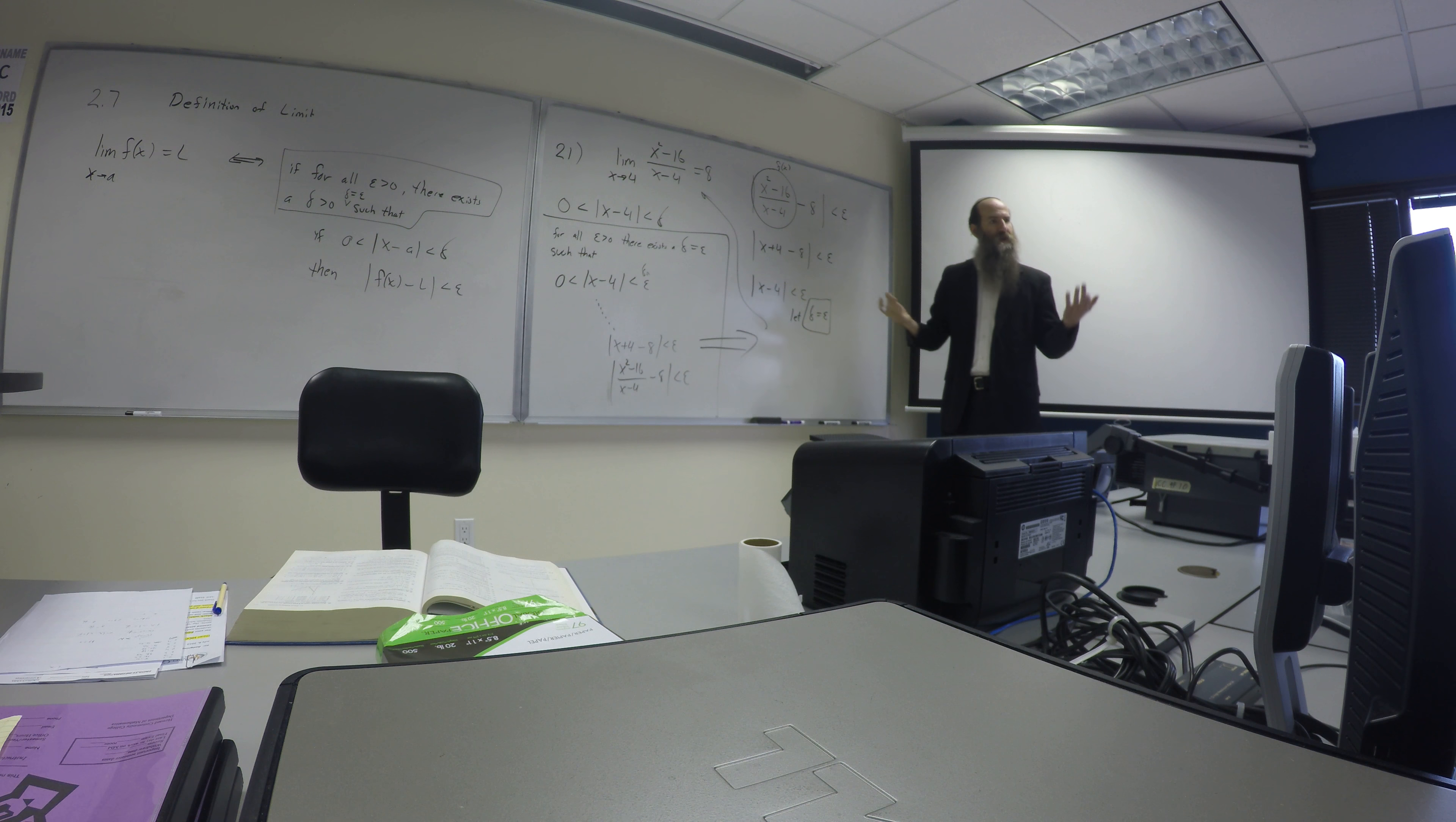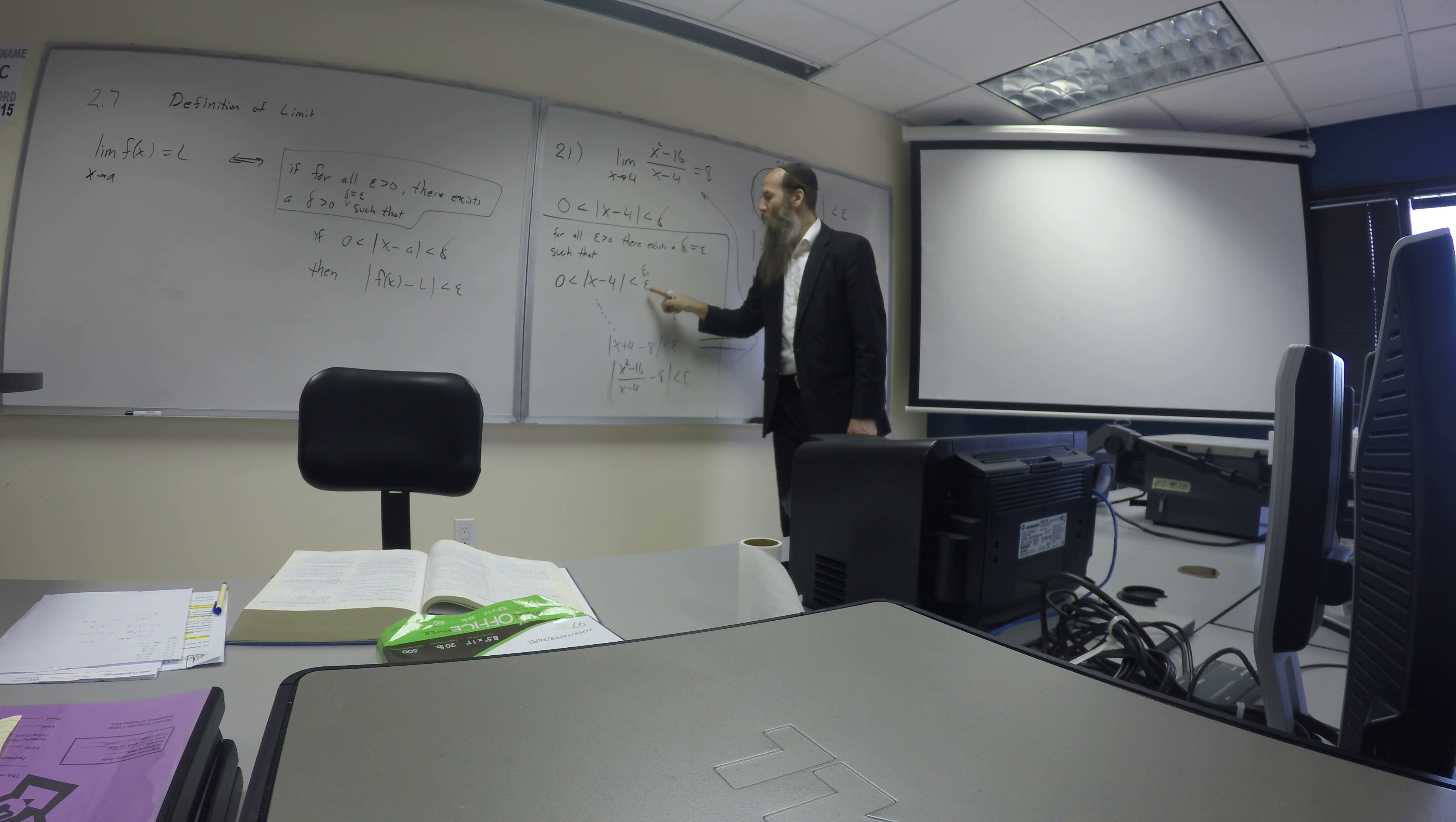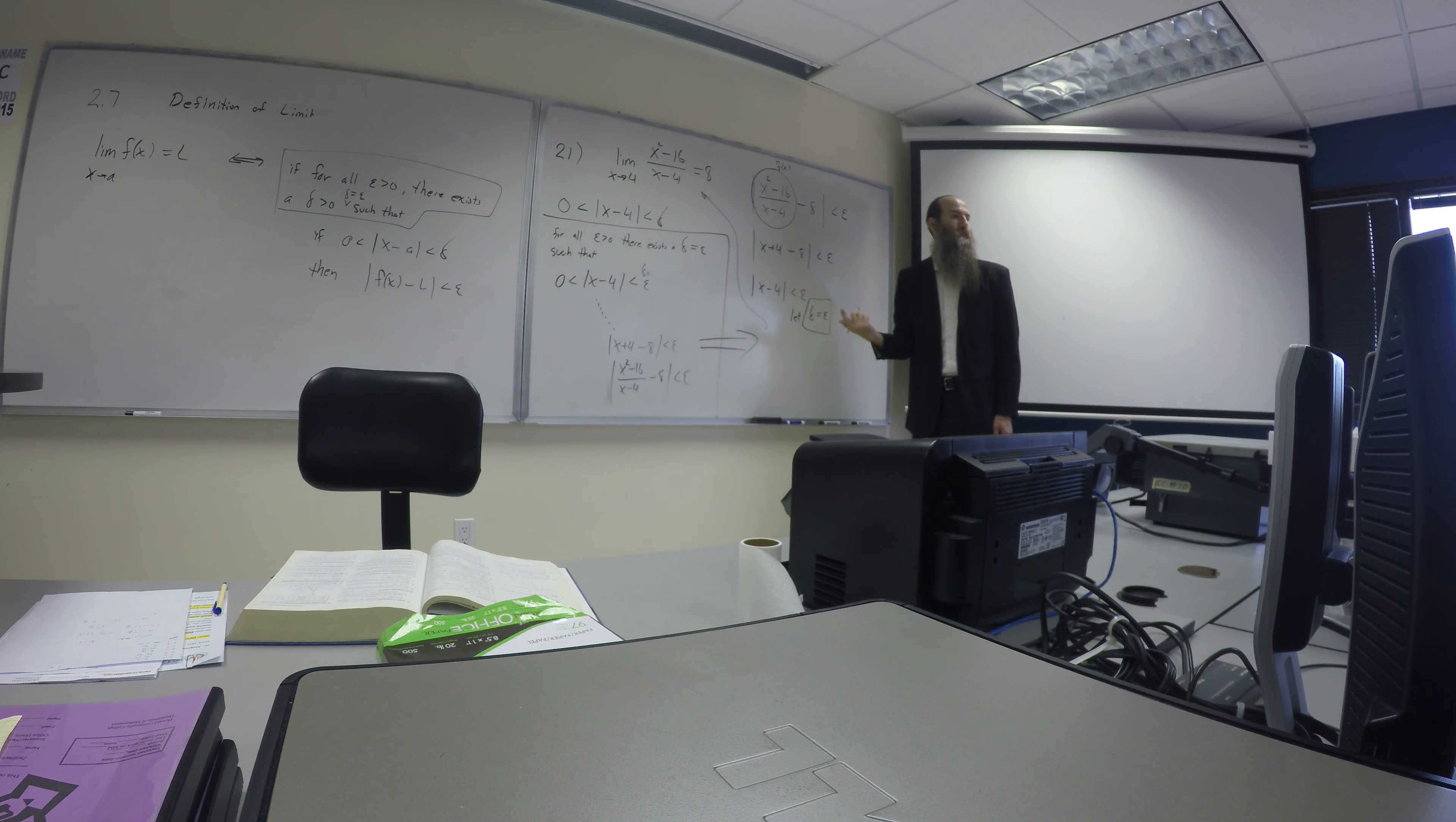Very close. Just give me a number. 8.1. You want it to be 8.1 away? Or 0.1, you're saying? Yeah, 0.1? Okay. If I want this function height to be a 0.1 distance at most away from 8, then I need to pick x to be a 0.1 distance away from 4. That's what I've got to do. That's what I've got to do. Guarantee it's going to happen. It'll be that close to 8.